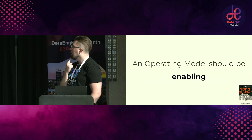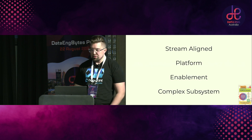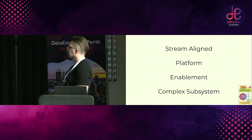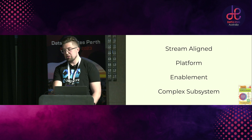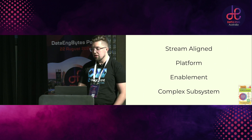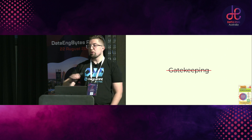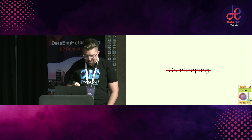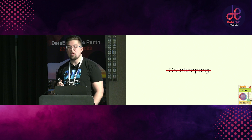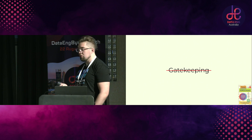An operating model should be enabling. You're looking to help people do their job better, not control them. When you look at Team Topologies and the four team types — stream-aligned, platform, enabling, complex subsystems — the other three are all looking at enabling stream-aligned teams to move faster. A lot of what we do in operating models is focused on this. There's no such thing as a gatekeeping team — there's no team whose job is to stop people doing things. It needs to always be focused around enablement: how do you help people do the right thing, not try to punish them when they do the wrong thing.